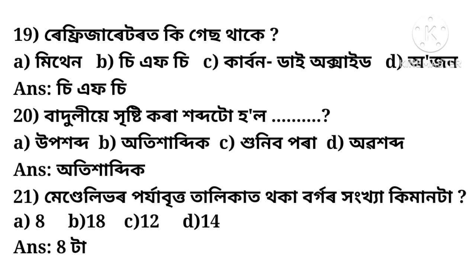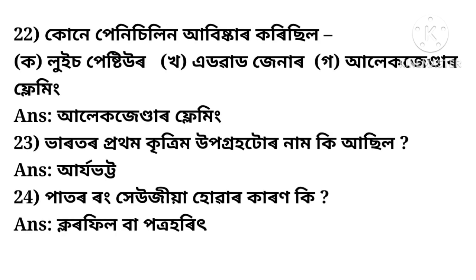The next question is about Mendeleev's periodic table having how many groups. Options are 8, Utratu, Barota, and Swedhota. The correct answer is 8. The following question asks who discovered Penicillin. Options are Louis Pasteur, Edward Jenner, and Alexander Fleming. The correct answer is Alexander Fleming.